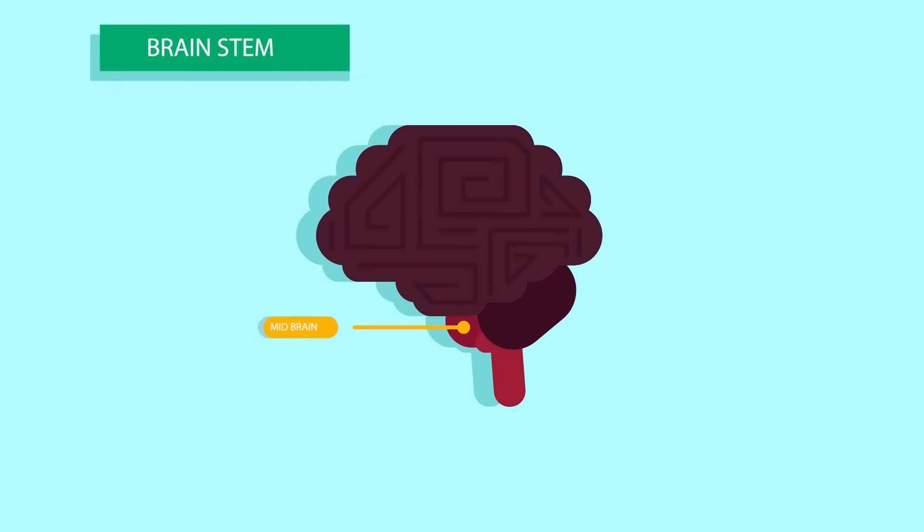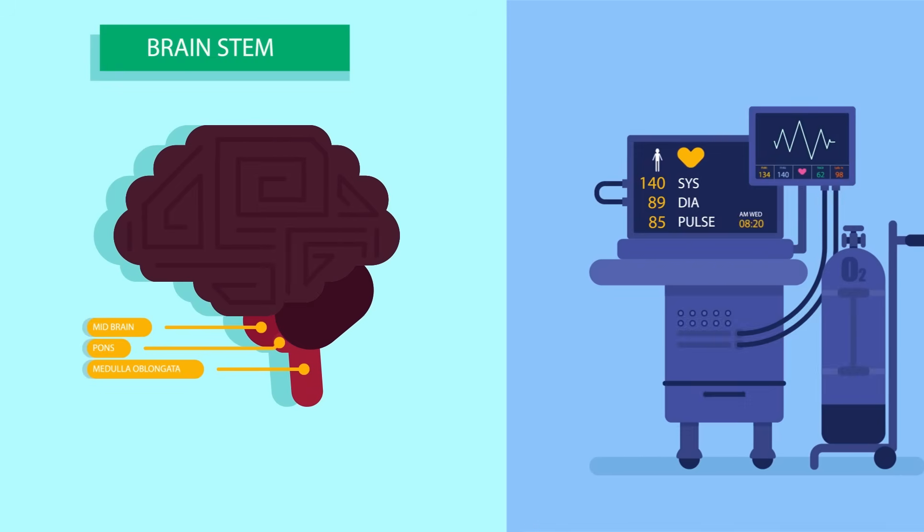Brainstem includes midbrain, pons, and medulla oblongata. It controls your body's involuntary actions, like breathing, heart rate, and blood pressure.